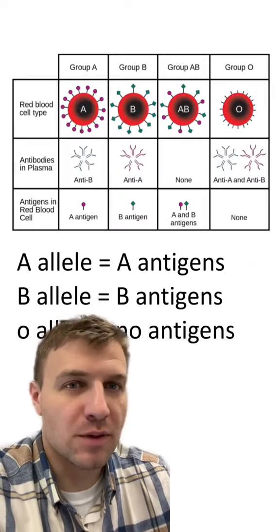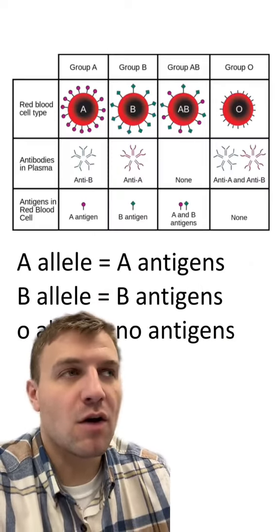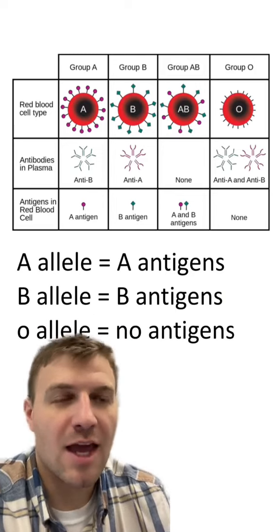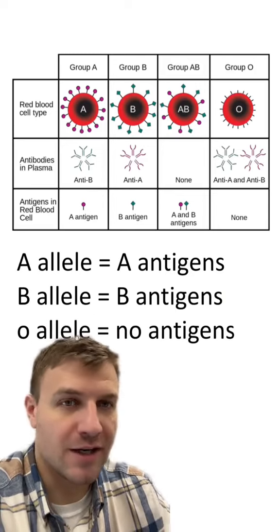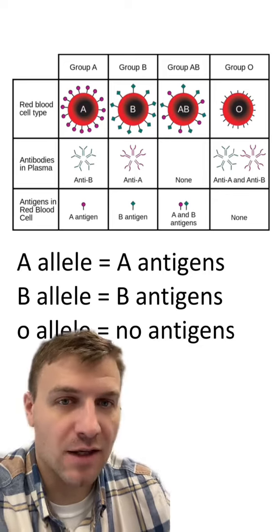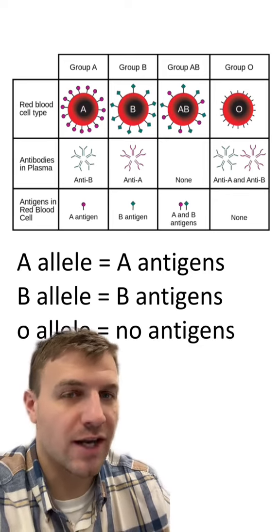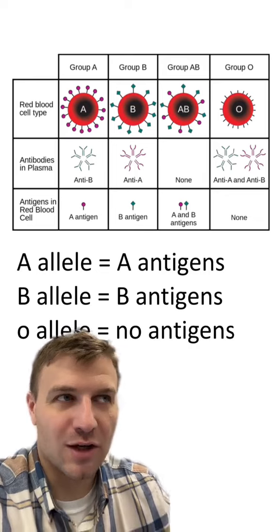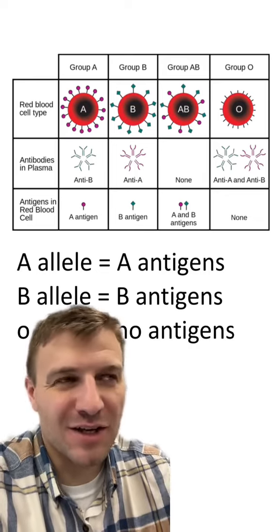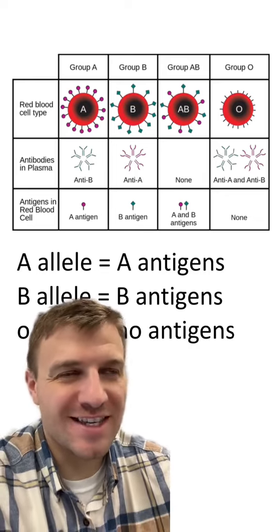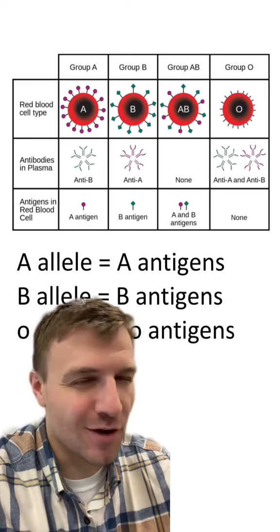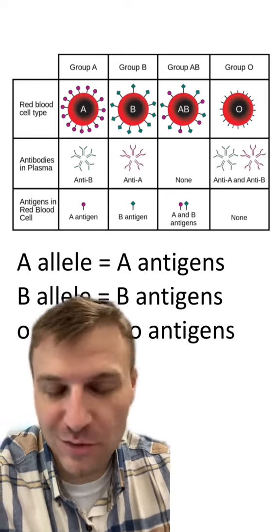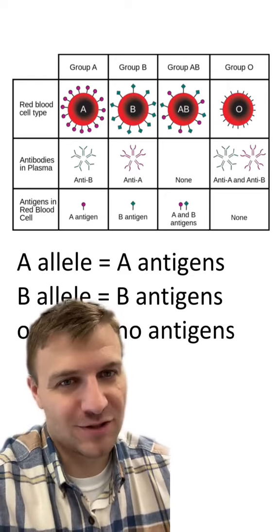When looking at human blood types, there are three different alleles that code for these antigens. The A allele will code for an A antigen, the B allele will code for a B antigen, and the O allele will not code for an antigen. I'm not going to go too far into O blood because technically there still are antigens on it, but for the basic knowledge we need here, O blood doesn't have antigens.